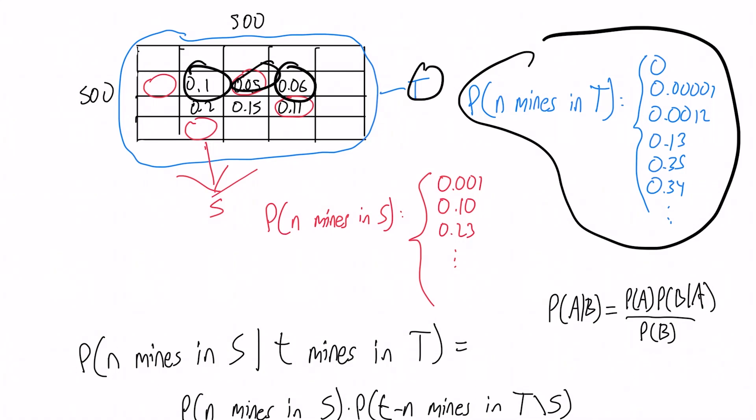Or what is the probability that you have one mine, two mines? I'm calling T the entire grid. All the way up to, you know, the size of T. And then similarly, you have the probabilities of having zero all the way up to the size of S mines in S.